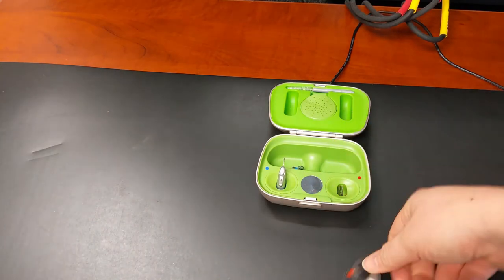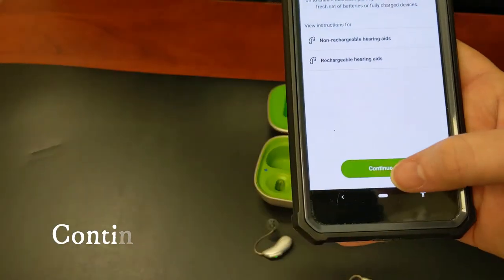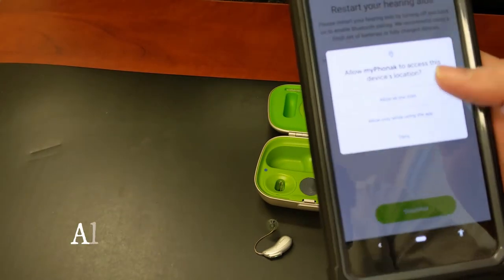Again we're going to take them out of the charger and lay them on the table so they're in pairing mode. And we'll tap continue on this screen and allow.